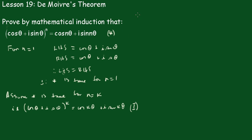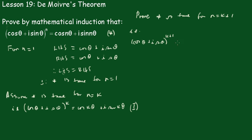Now we're going to prove this is true for n equals k + 1. That is, (cos θ + i sin θ) to the power k+1 equals cos(k+1)θ + i sin(k+1)θ. We'll call that equation (2).